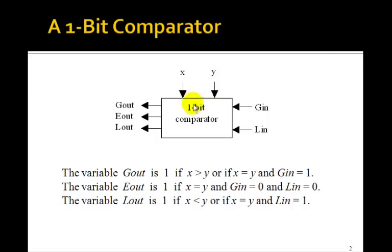Here's a 1-bit comparator that's going to compare a single bit x to a single bit y. Notice there are two other inputs, Gin and Lin, and three outputs, Gout, Eout, and Lout.